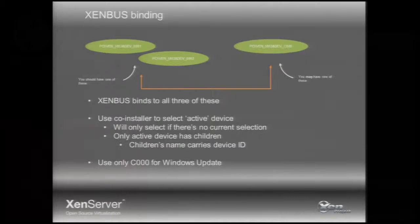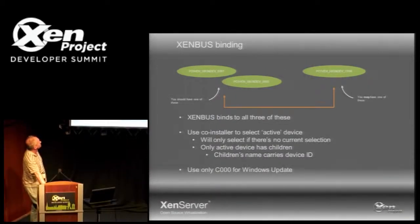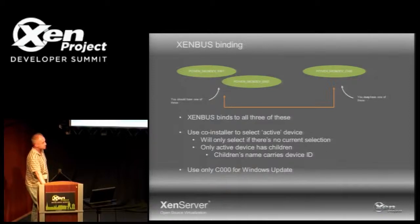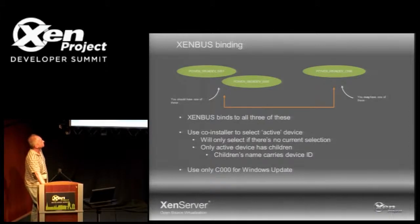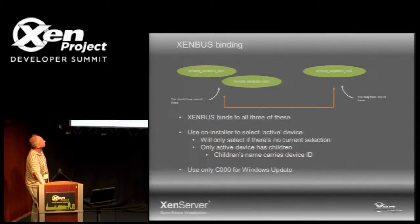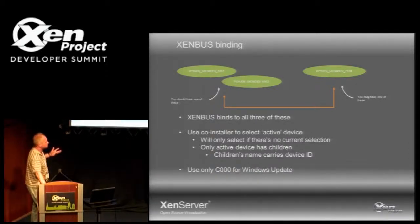Regarding the XenBus binding: to make things usable by most people — and this was also requested by Amazon since they use our PV drivers — XenBus binds to the existing platform device that everybody has. However, we don't want people getting unexpected Windows Update drivers, so we also make it bind to the new device I upstreamed into QEMU. Drivers on Windows Update will only carry bindings for the new device ID. So binding to the old device lets you use the driver but won't trigger Windows Update; having the new device will get you drivers from Windows Update — but it's still the same binary.